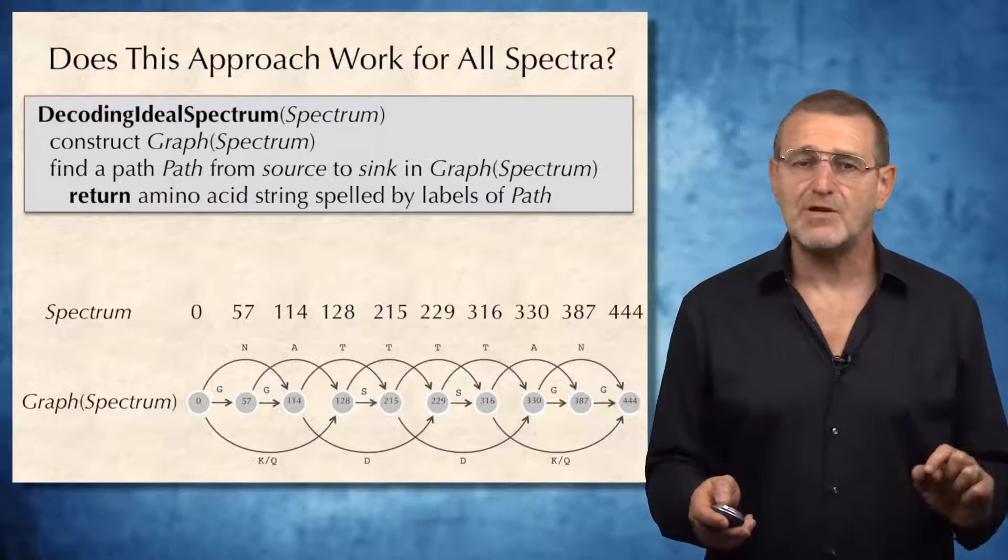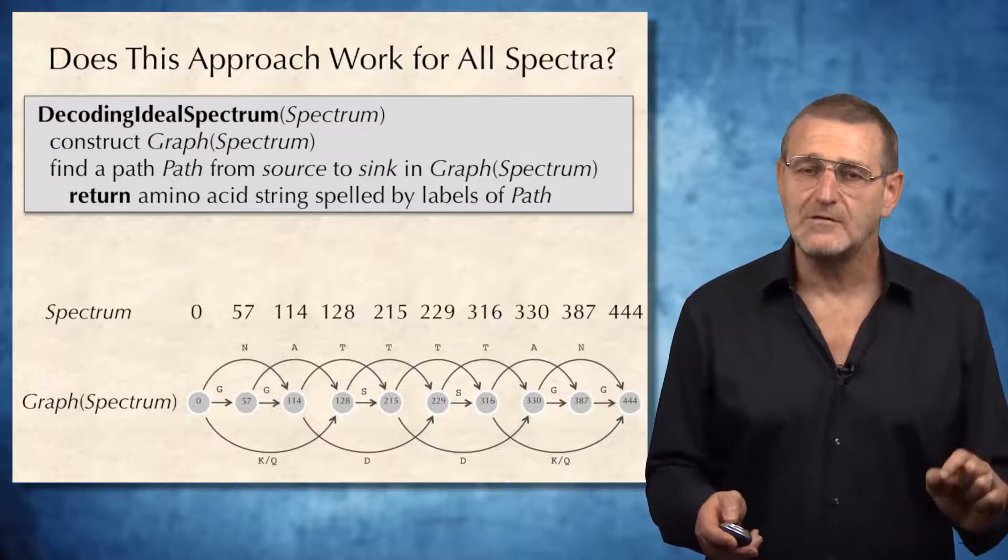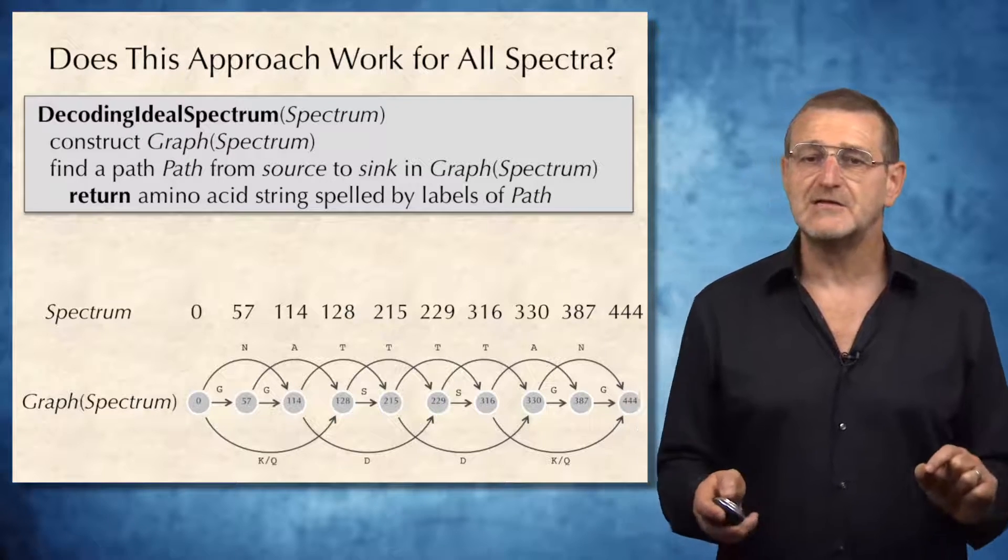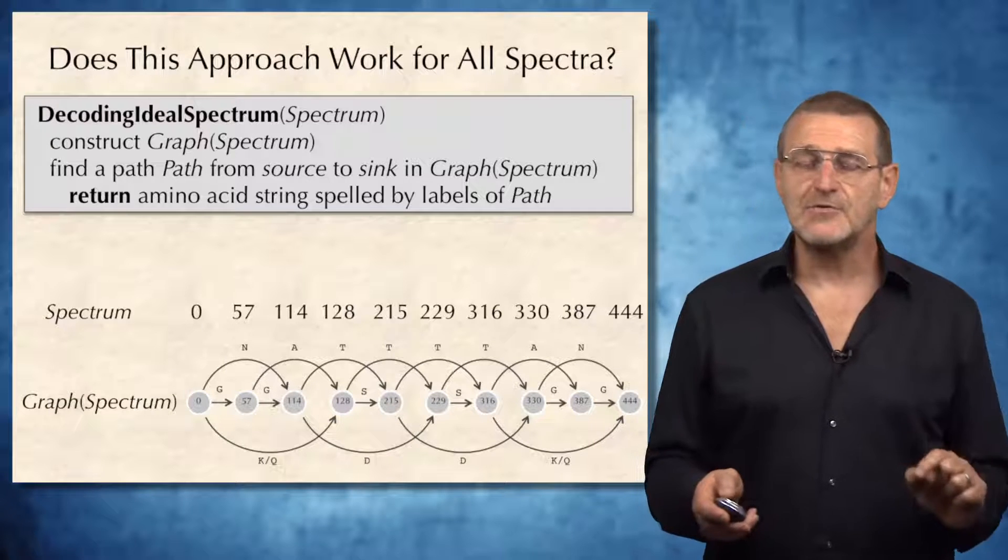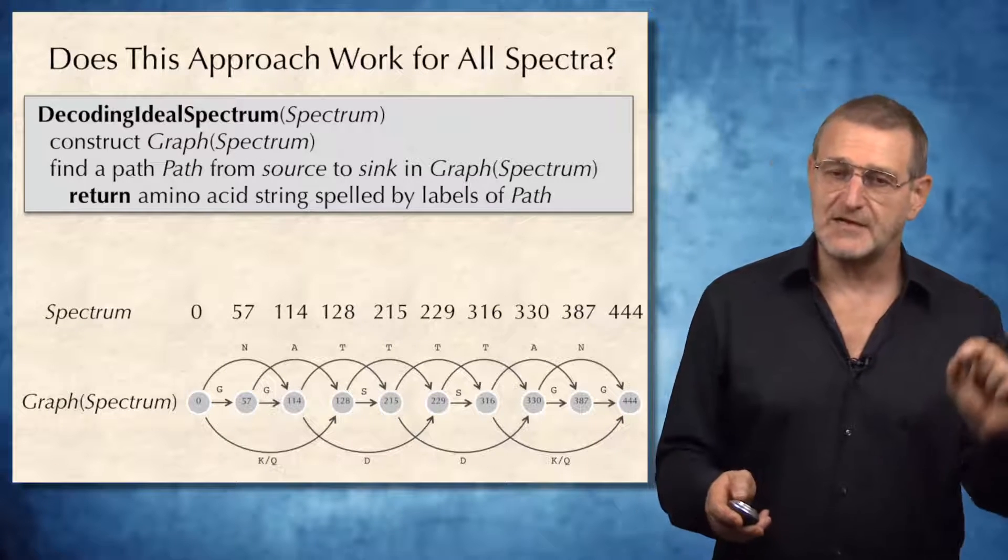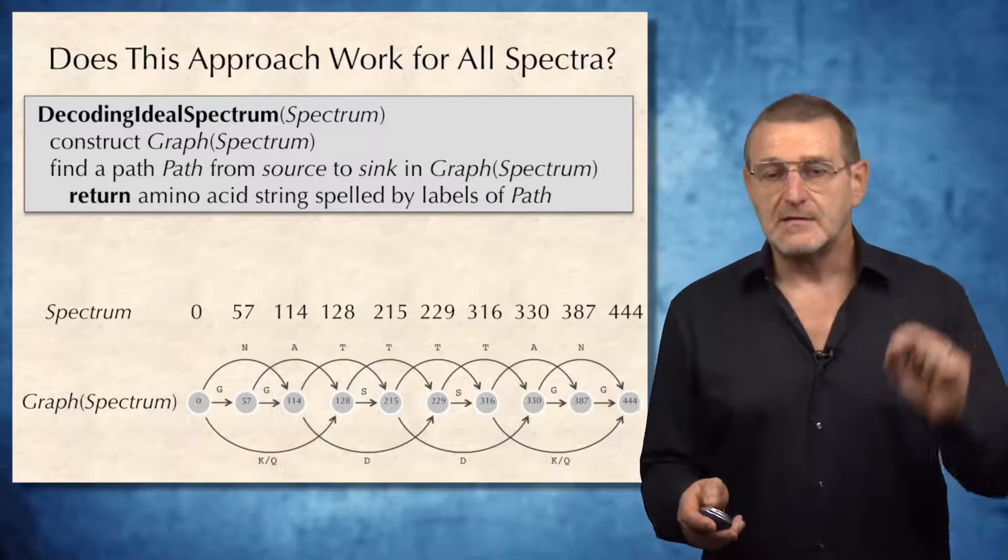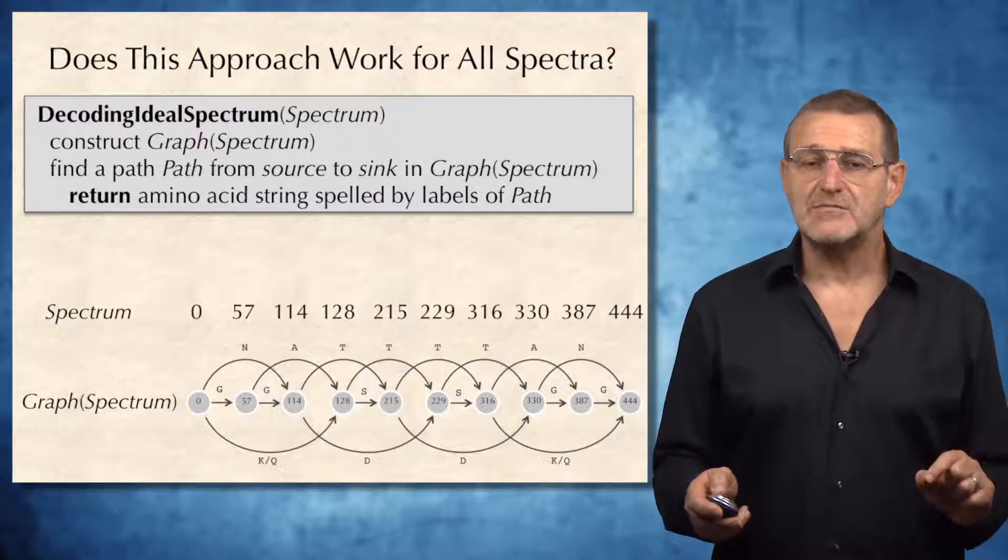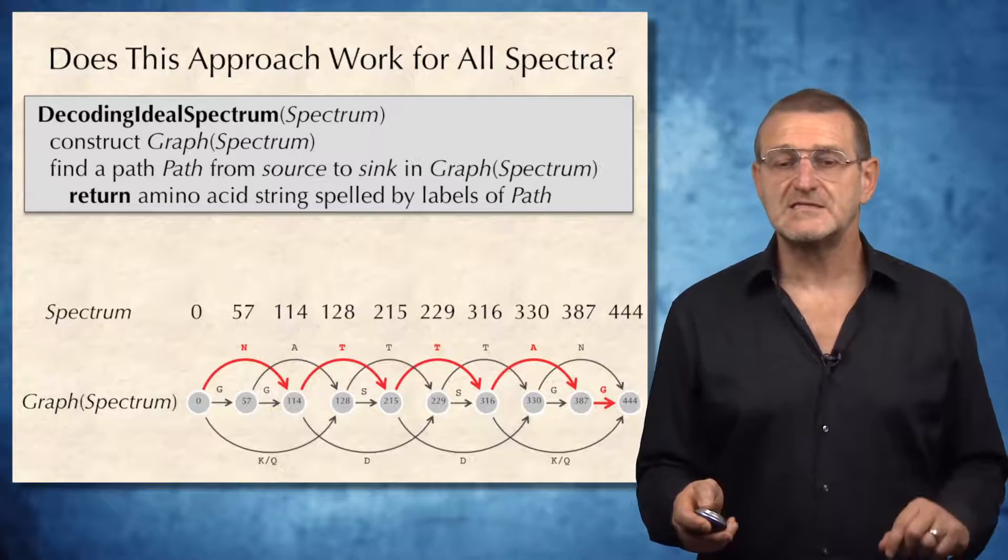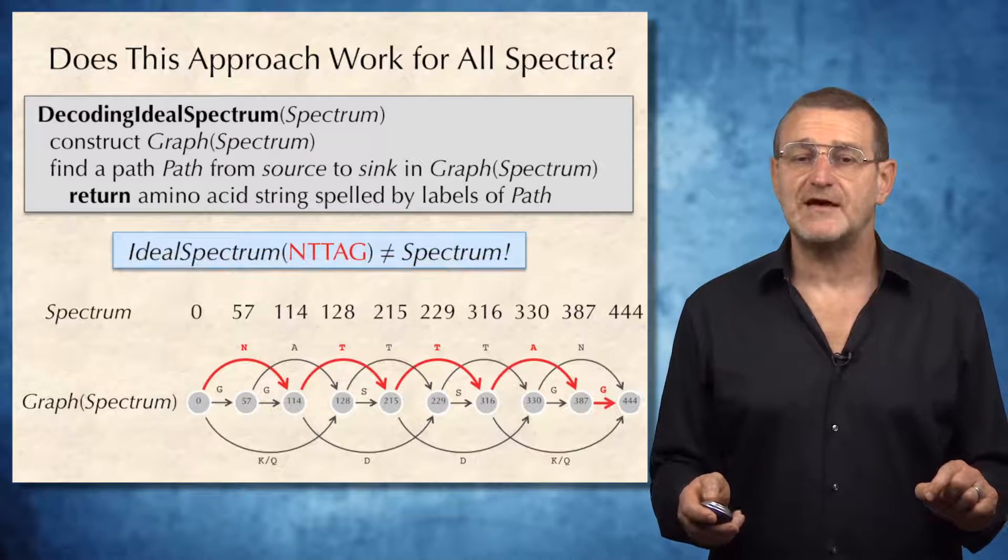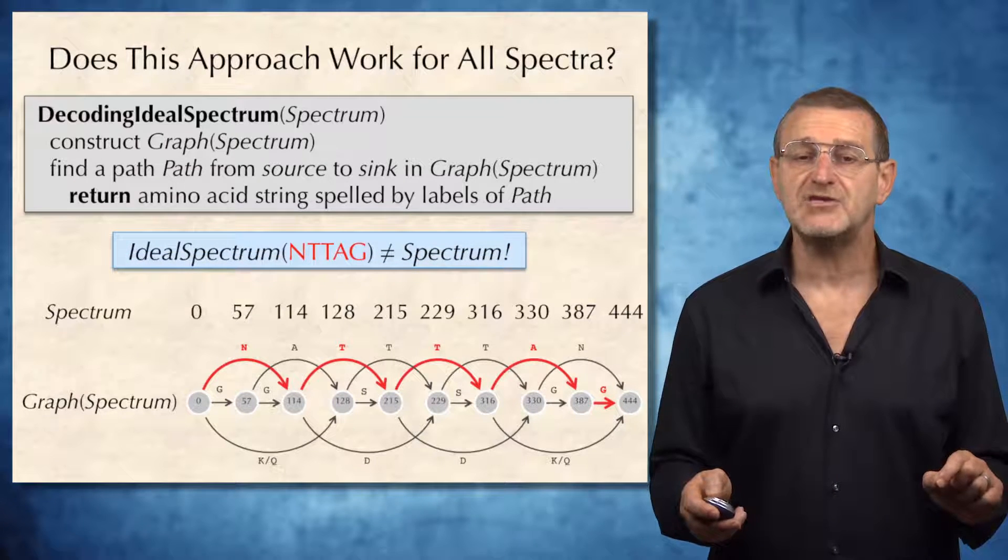That sounds simple, but does it really work for all spectrums? It clearly worked for a simple spectrum that we considered before. Let's take a look at this spectrum. I'll tell you that it's an ideal spectrum of an unknown peptide. The constructed graph of spectrum. And let's consider this path in this graph. This path spells out peptide NTTAG.